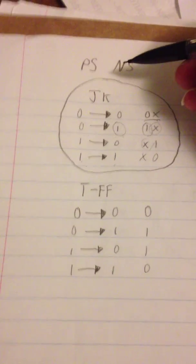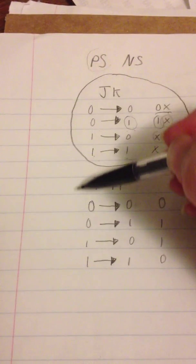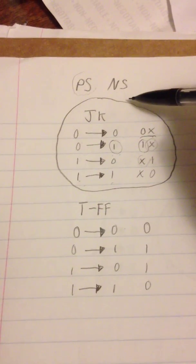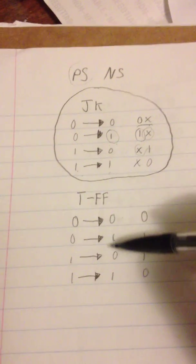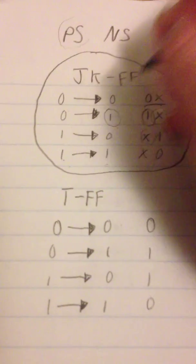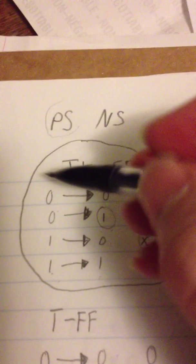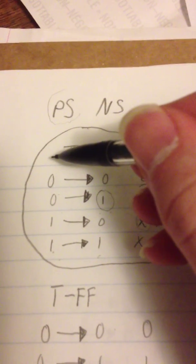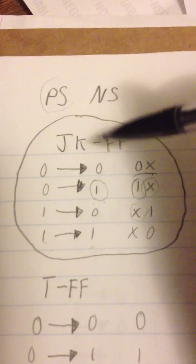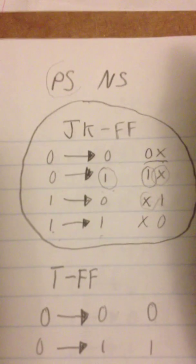This is a representation of the whole thing — this is representing the present state column, which runs all the way down here. This is the next state column, which runs from here all the way down for both kinds of flip-flops. This is a JK flip-flop — this is just shorthand, of course. It would go from A present state to A next state, or B present state to B next state. It always uses the same variable, so this is just a heavy generalization.